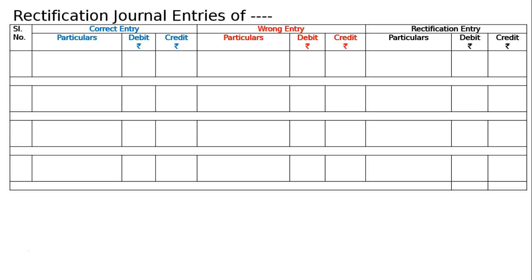The first error: purchases of 10,000 is omitted to be recorded. The correct entry is purchases account debited to creditors account 10,000 each. It is not written whether the purchase was on credit; we could have used cash — purchases account debited to cash account. There is no wrong entry to reverse, only a rectifying entry is needed.